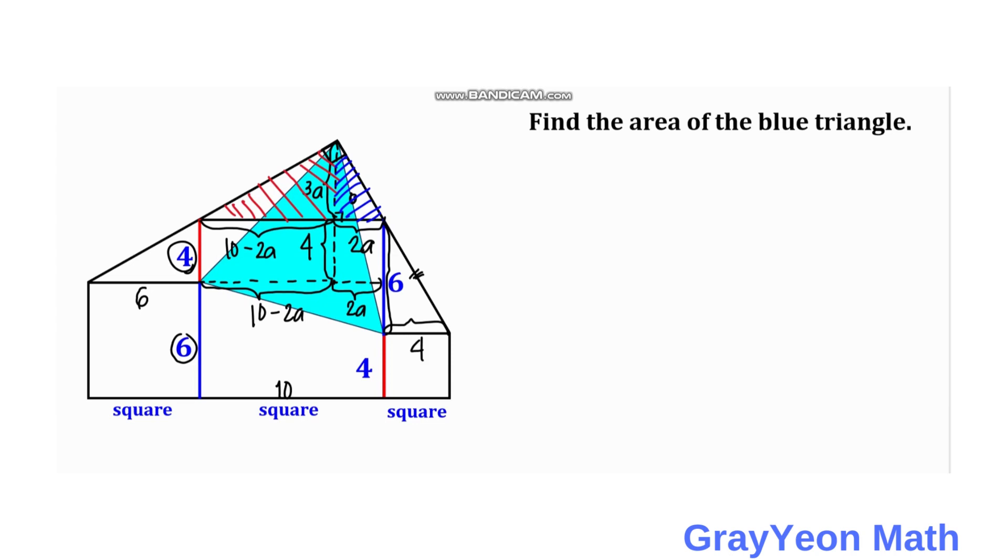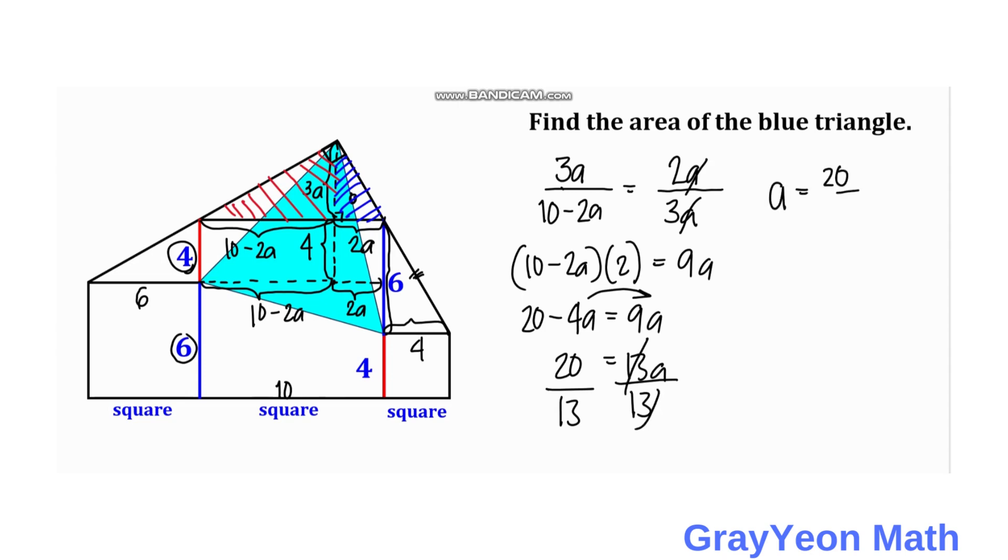So next is we focus on this red and the blue triangle. So for the red, the shorter leg is actually 3a. We divide this by the longer leg which is 10 minus 2a equal to this blue rectangle and the shorter leg is 2a. And the longer leg is 3a. And we can cancel this out, this a. So we cross-multiply we have 10 minus 2a times 2 is actually equal to 9a. So we have 10 times 2 is 20 minus 4a is equal to 9a. So if we put this 4 to the right-hand side, we have 13a is equal to 20. So we divide both sides by 13. So we have a is equal to 20 over 13.